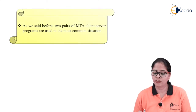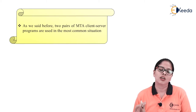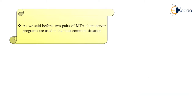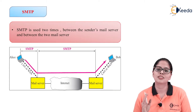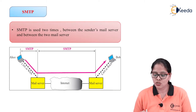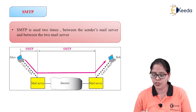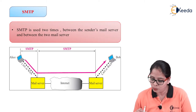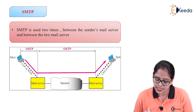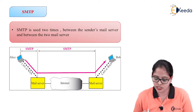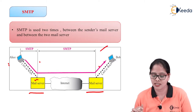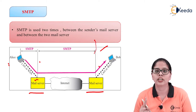As said before, two pairs of MTA client-server programs are used in the most common situation — remember the fourth scenario. SMTP is used two times: between the sender and the mail server, and between the two mail servers. SMTP is used between Alice and the mail server, and again between the two mail servers. At the third stage, we use a different protocol which we'll discuss later. SMTP is used only for these two steps.